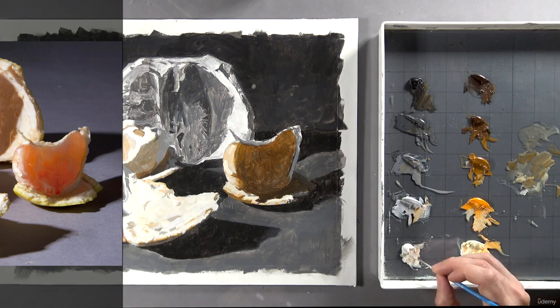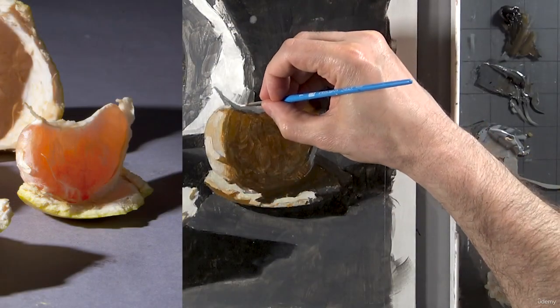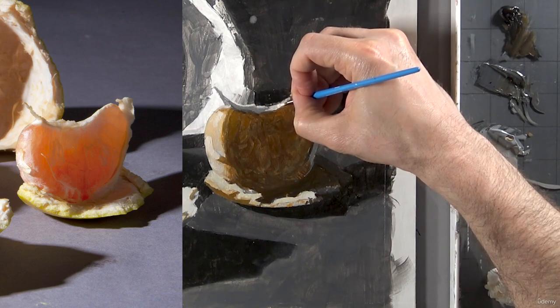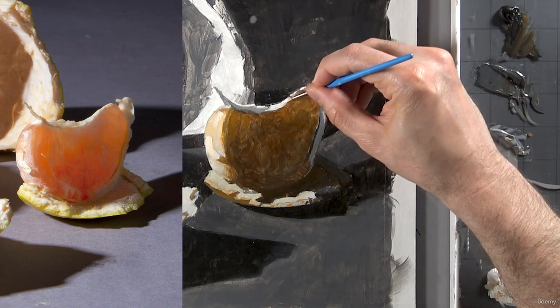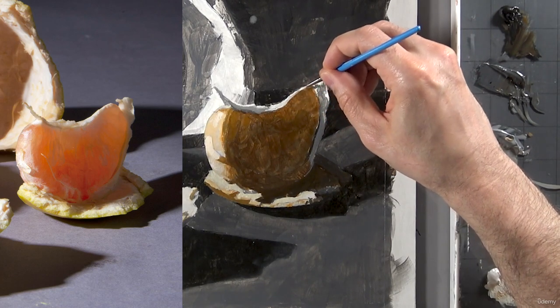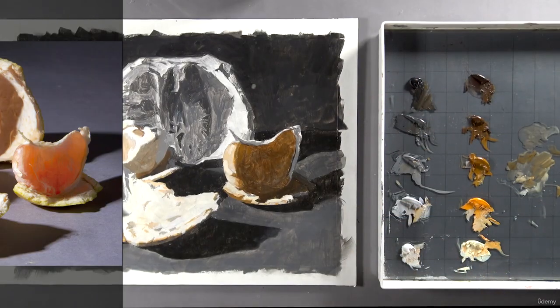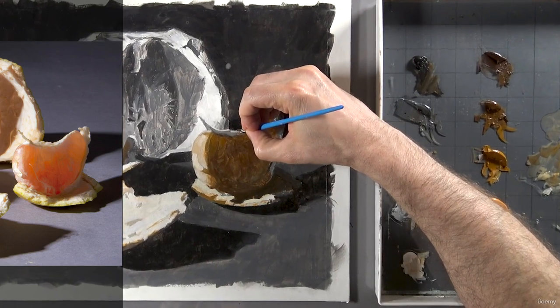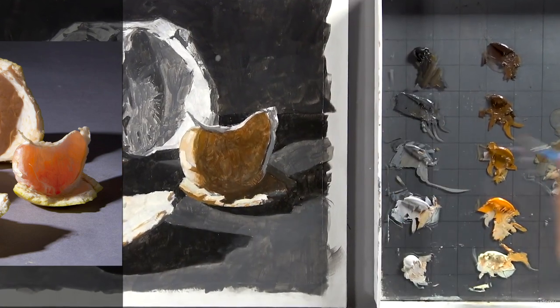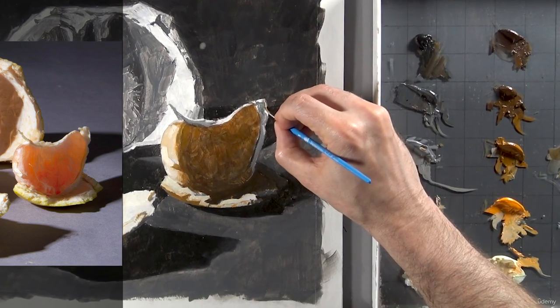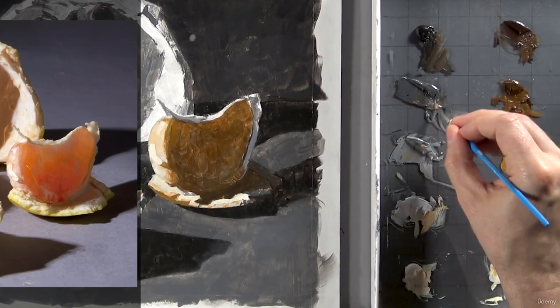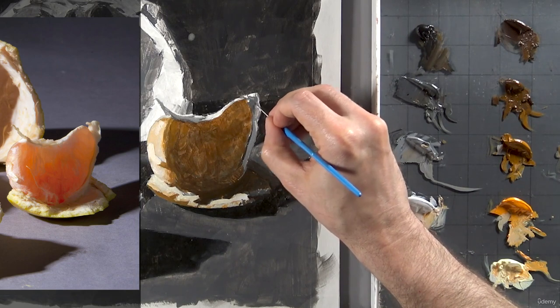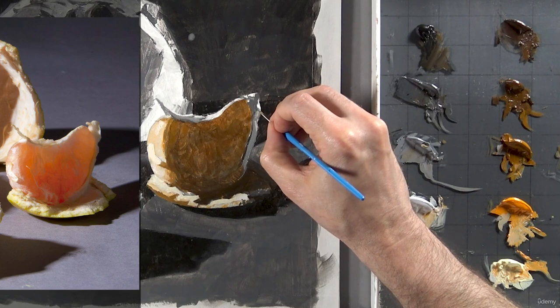Next I'm going to pick up some first value and put in some of the bright rim lights along the top of the section. As you can see, I'm using fourth value gray in my detail brush to define these smaller shapes.